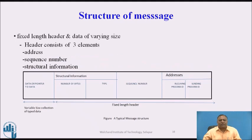Now we look at the structure of a message. The sender sends a message and the receiver receives it, but there is a specific format or structure. There is a fixed-length header and data of varying size. The header consists of three elements: address, sequence number, and structural information. In the diagram, the fixed-length header is followed by a variable-size collection of data types. The data field contains data or a pointer to the data, along with number of bytes and type of information. Each message has a sequence number, and the address field contains the receiving process ID and sending process ID.